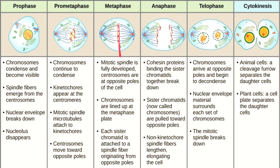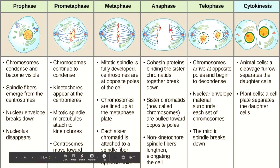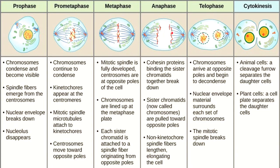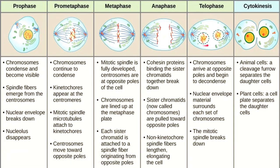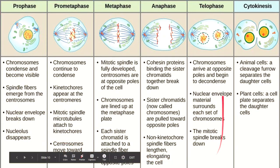During anaphase, the spindle fibers pull each chromatid toward the opposite pole — the separation of chromosomes. Then during telophase, everything returns: the nuclear membrane reforms, the spindle fibers disappear, and the chromosomes begin to decondense. These are the stages of mitosis, which are then followed by cytokinesis — the division of the cytoplasm and cell membrane.